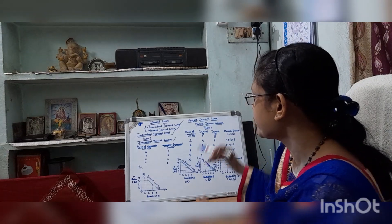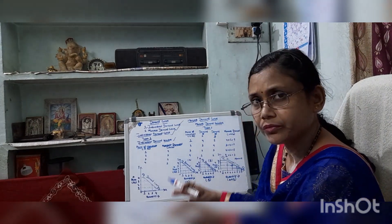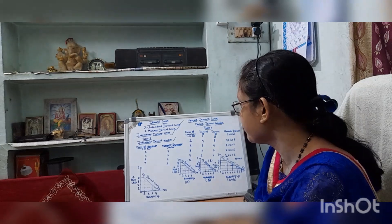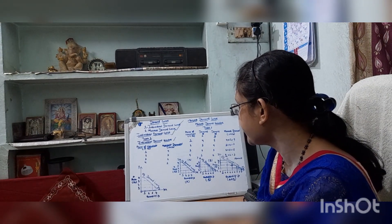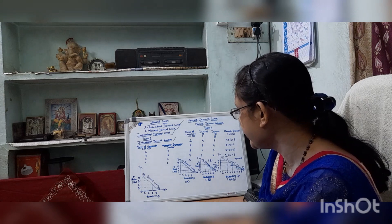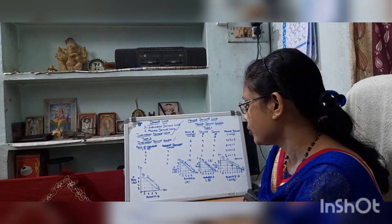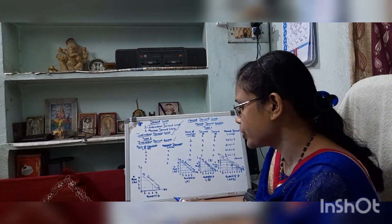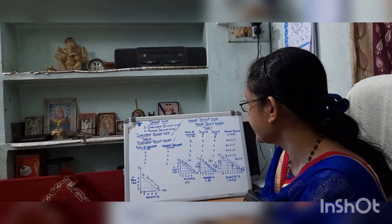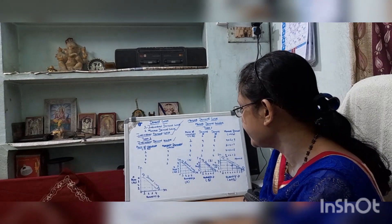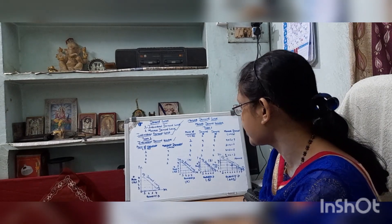First I will discuss the individual demand curve. It shows different quantities of a commodity demanded by an individual consumer at different prices.